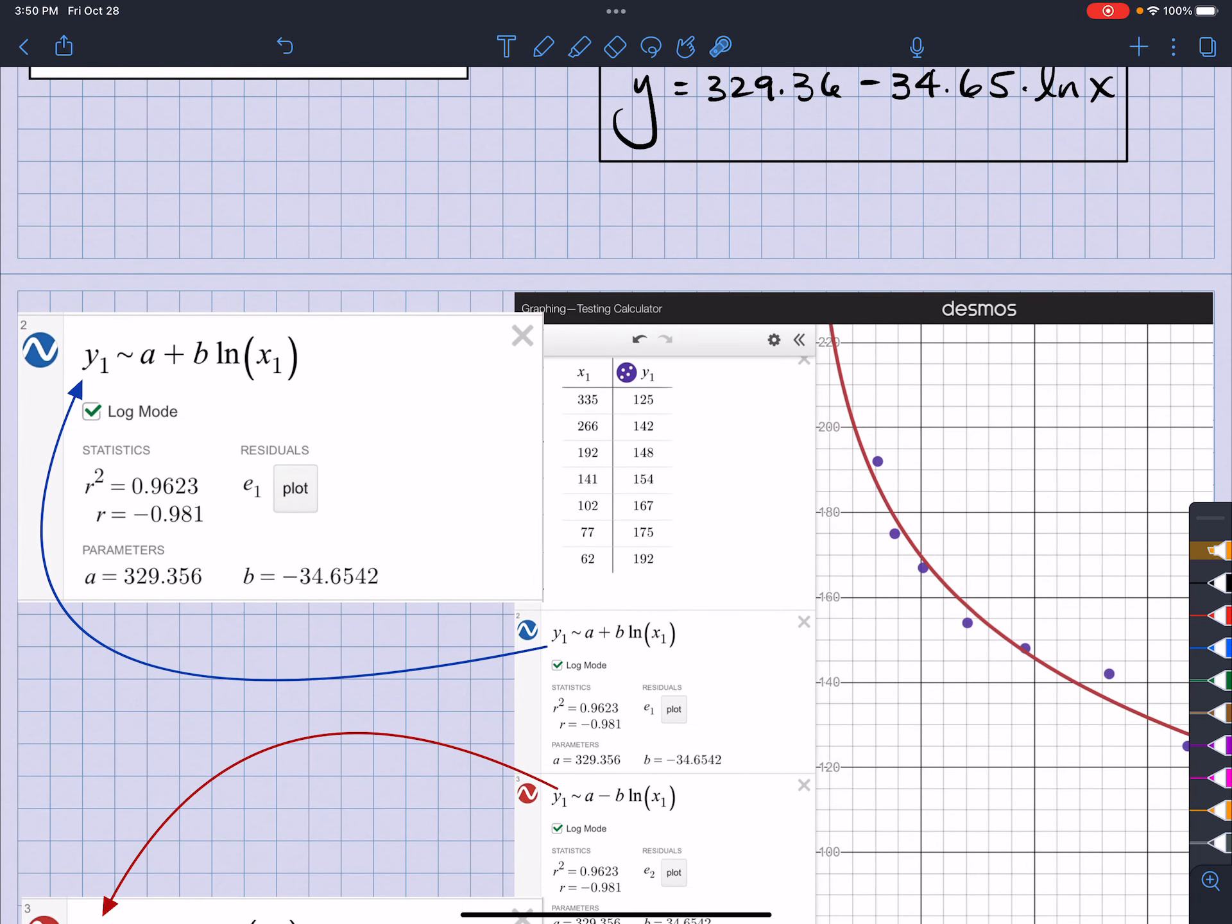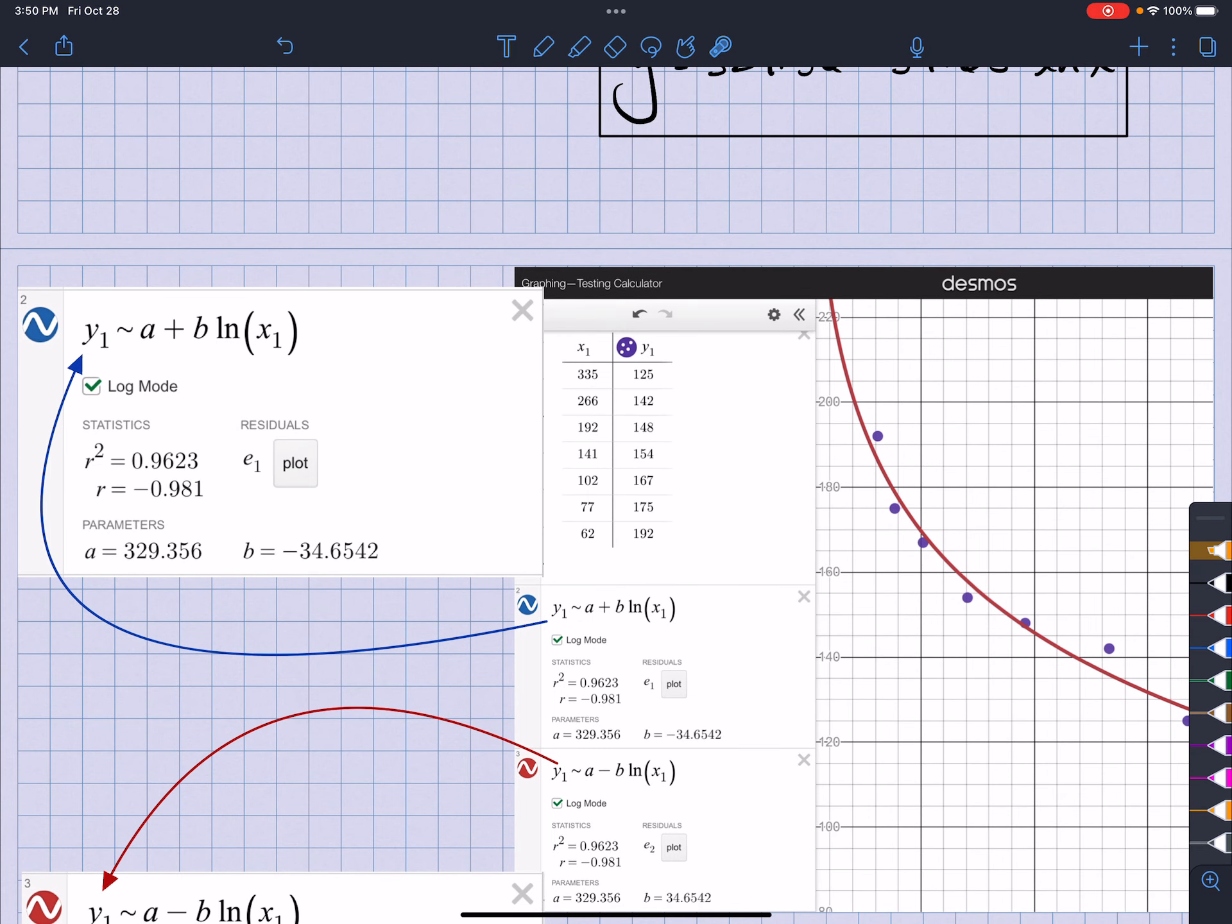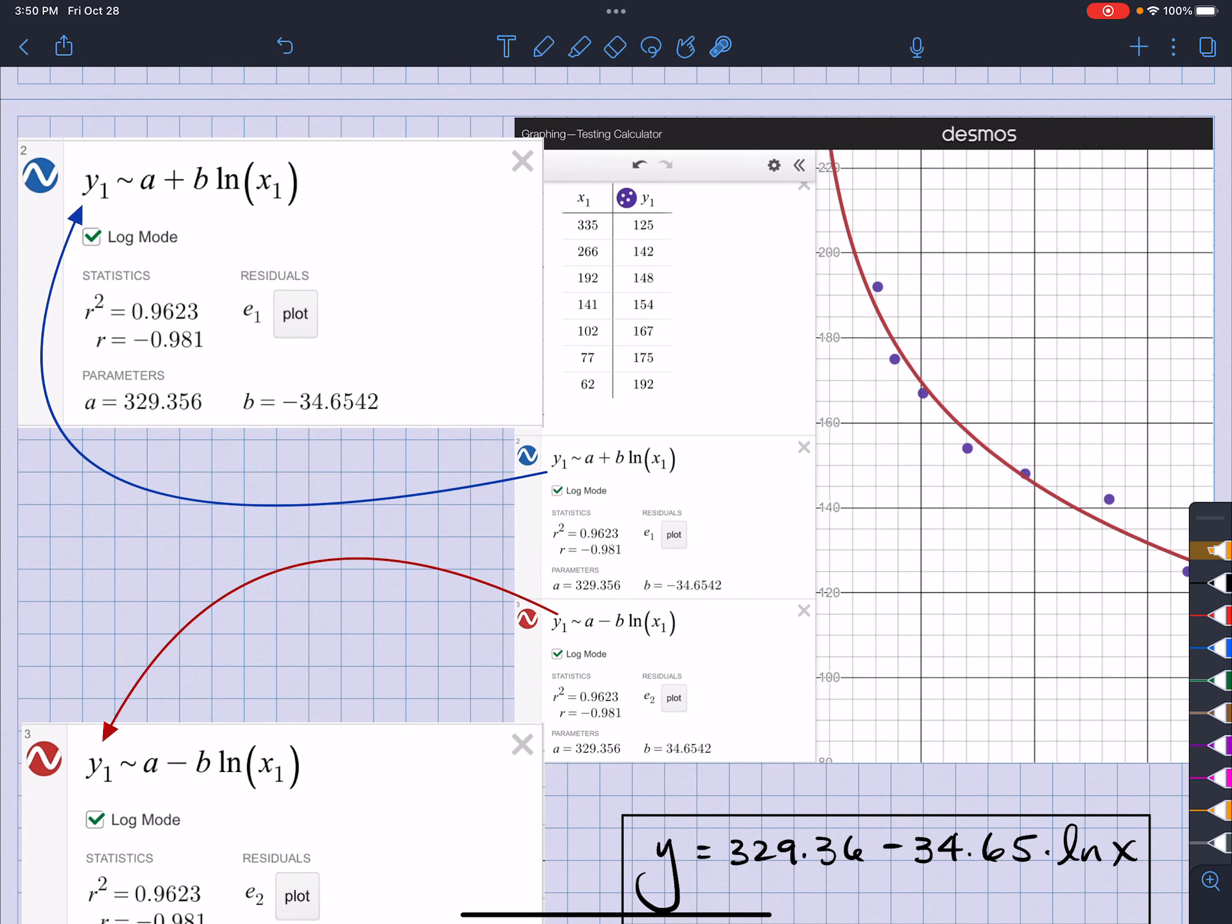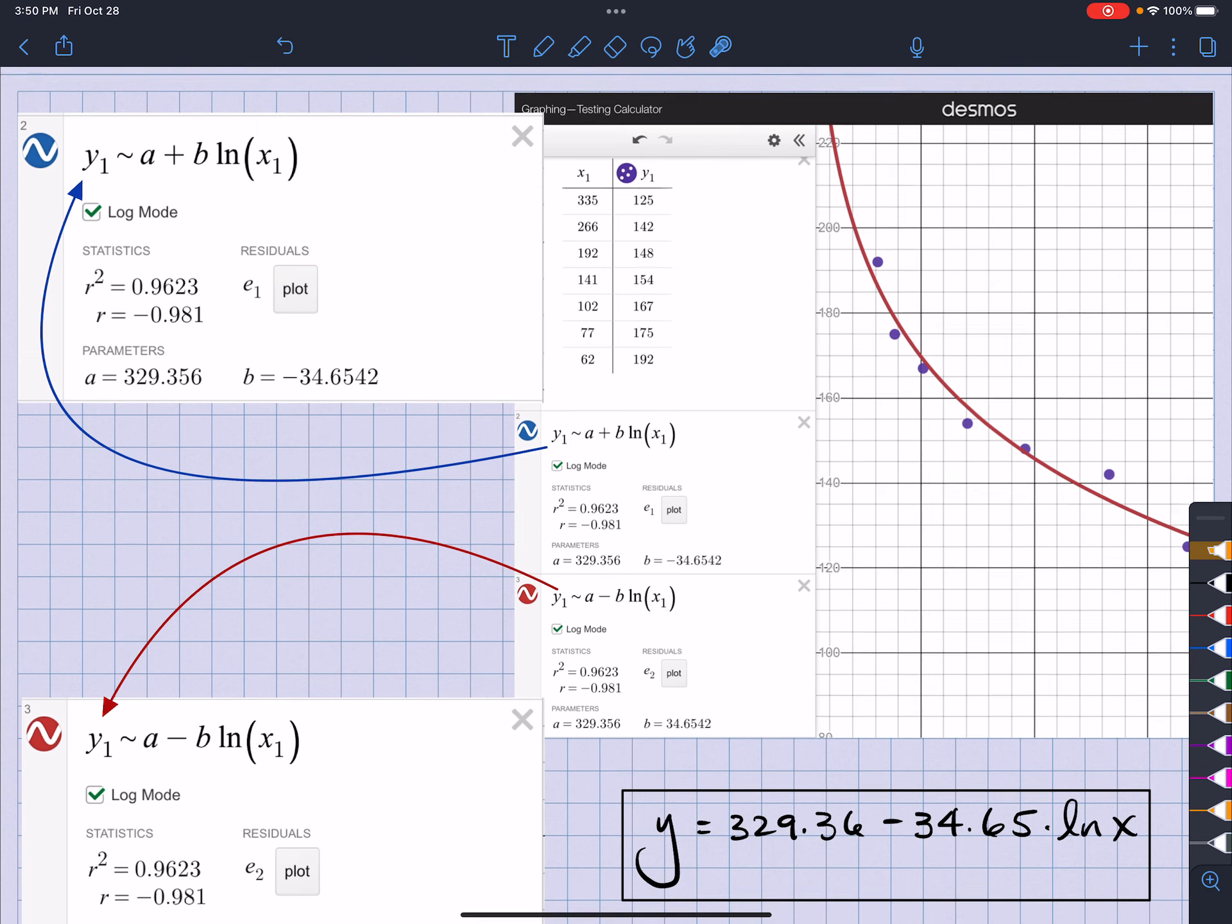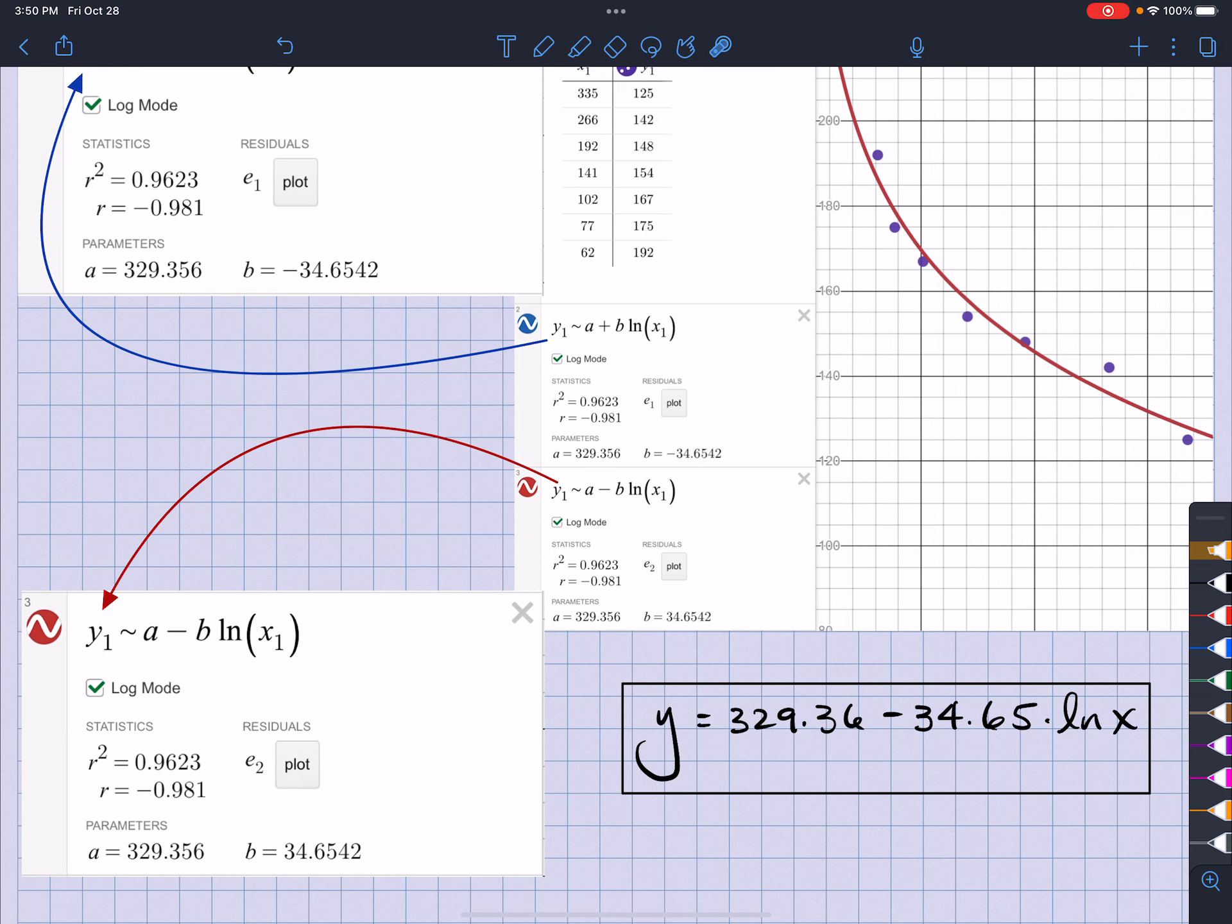In Desmos, same idea. Right. The plus sign. Then, hit table so I can enter the table. Now, notice what I did here. Right. I entered the same thing here. But, I also entered one that says minus instead of plus.